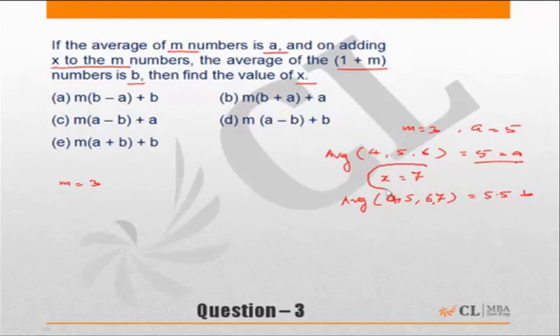Then what is the value of x? We know the value of x is 7. Put m equal to 3, a equal to 5, b equal to 5.5 in the choices, and whichever does not give you 7, that choice has to be incorrect. So let us start checking the choices.